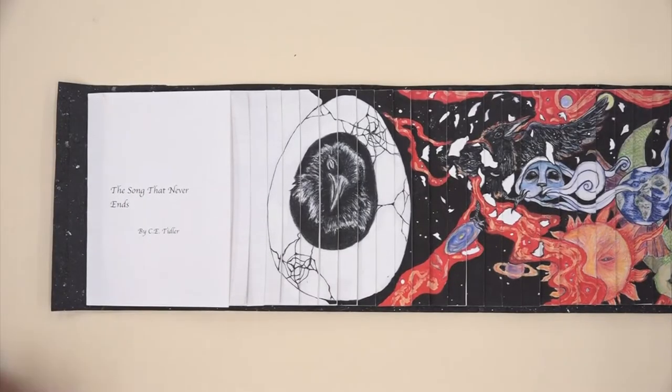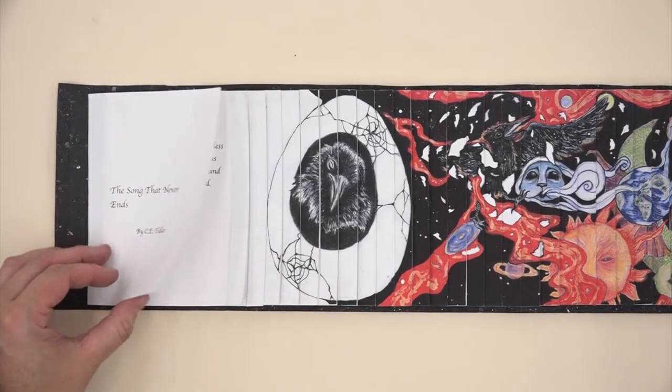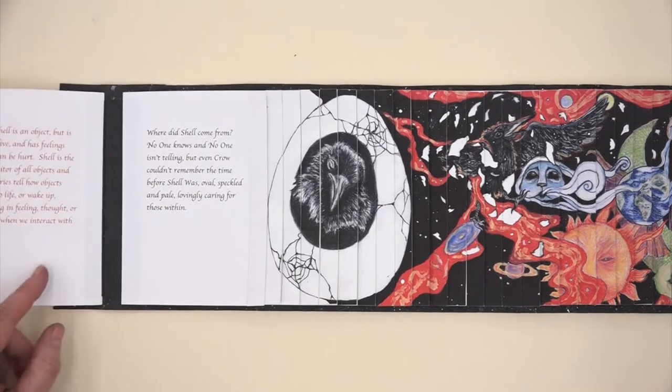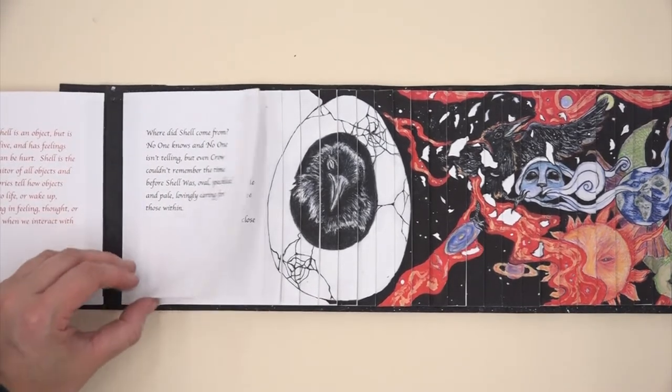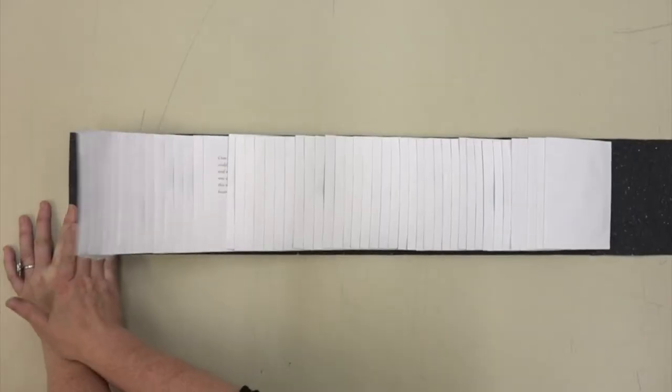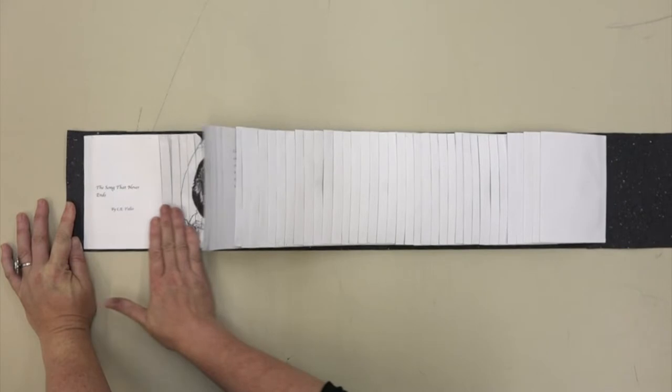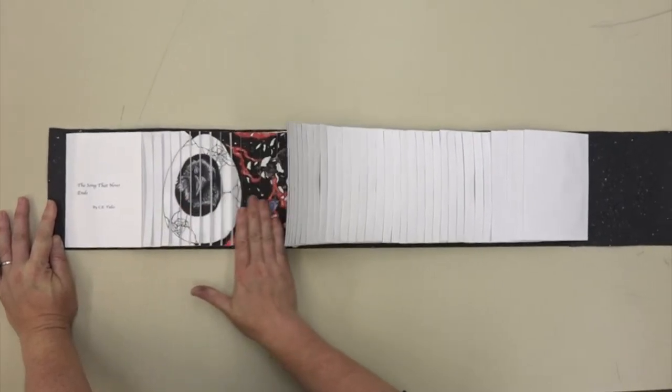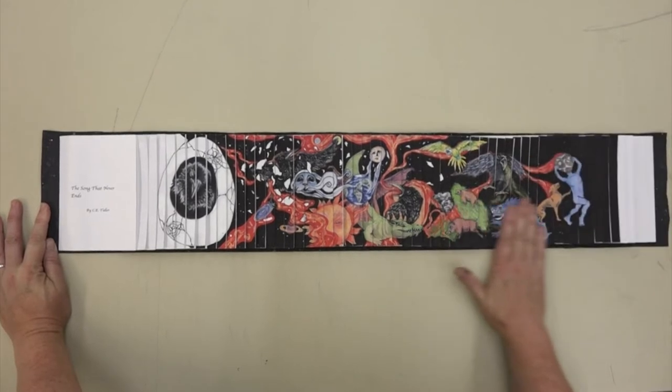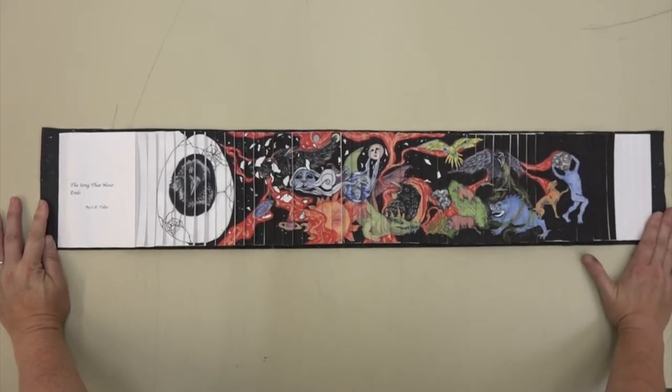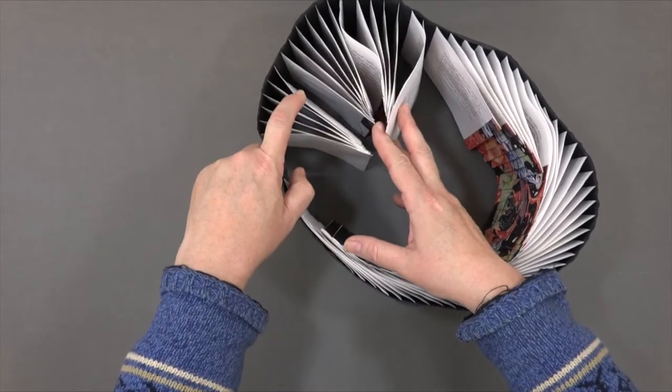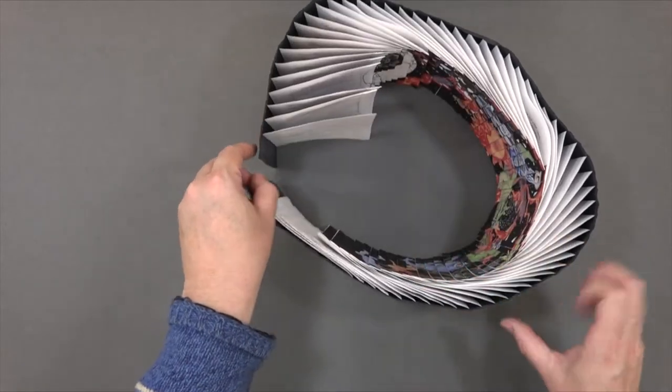Cindy had written a creation story for her folklore class and wanted to create a unique book. As she searched for an appropriate book structure, she learned about the dragon scale binding. While she was not able to find many examples to use for reference, the book structure was very appealing to her. The structure allows the viewer to turn the pages and then the book can be rolled into a scroll. Her book combined a panoramic drawing with the text that she had written.